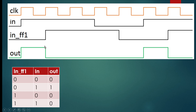I will tell you two approaches to this type of problem. In the first method, we simply put a flip-flop after the input signal. I usually name the output of this flip-flop as 'in_ff1', so 'in_ff1' will be delayed by one clock cycle.